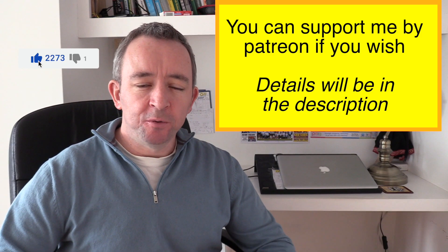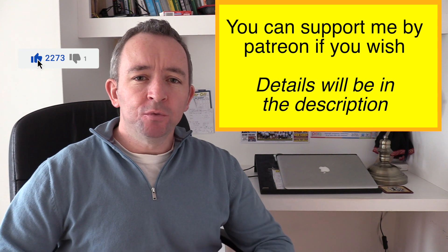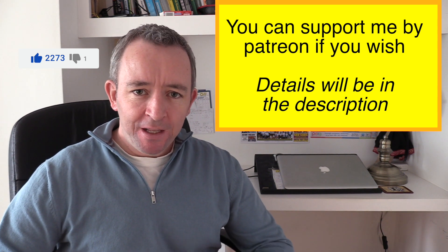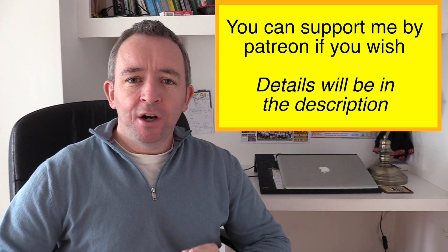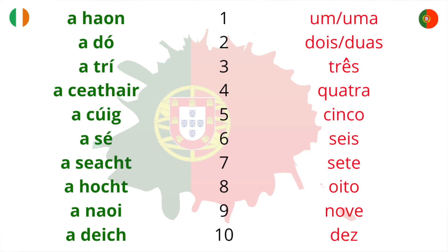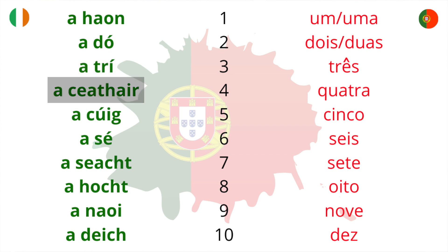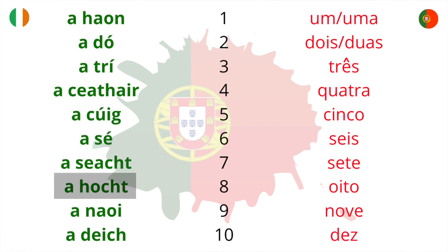Let's move on and compare some Irish and Portuguese words, starting with numbers 1 to 10. You'll notice there are quite a few similarities — they're all fairly similar to some extent, with the possible exception of the number 5. The Irish numbers are: a haon, a dó, a trí, a ceathair, a cúig, a sé, a seacht, a hocht, a naoi, a deich.